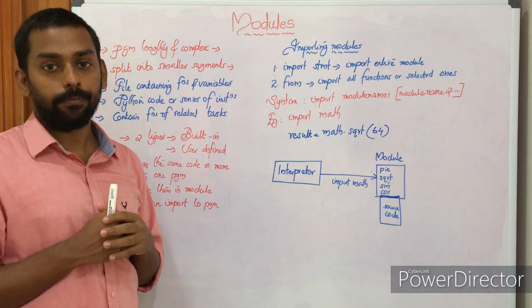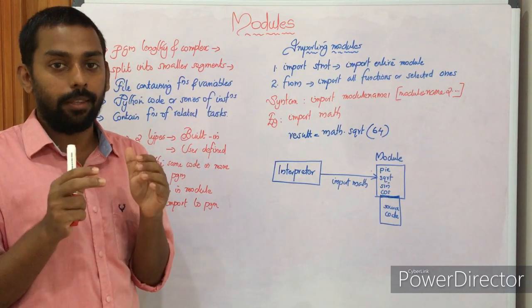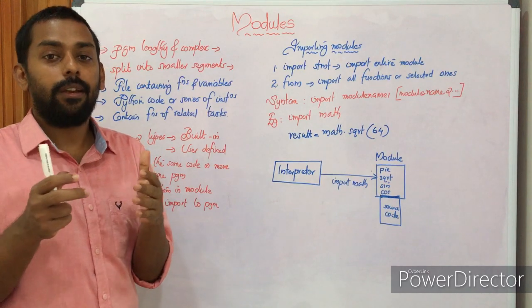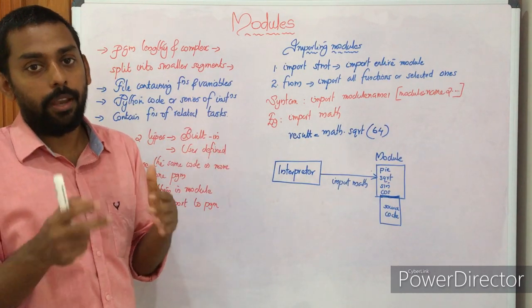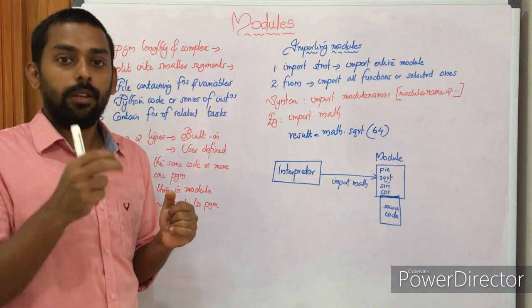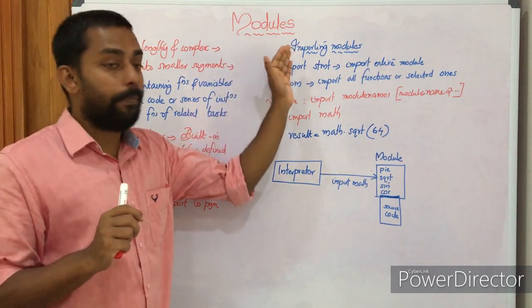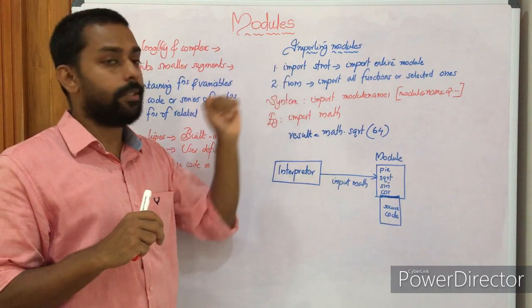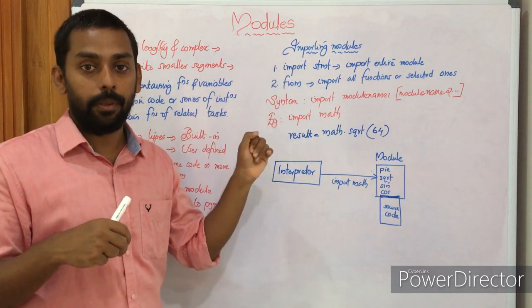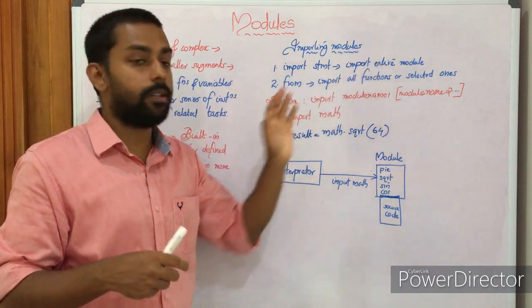Next we have importing modules. A module is a part of the library. We have already seen a built-in module — math. If you want to find the square root of a number, we import the math module to our program and make use of the sqrt function, which belongs to the math module. In Python, we have two ways to import modules: one is using the import statement, which imports the entire module; and the second option is using 'from', which allows us to import all or selected functions from the module.